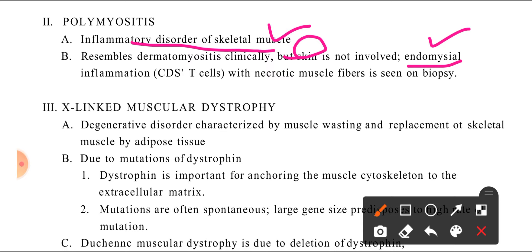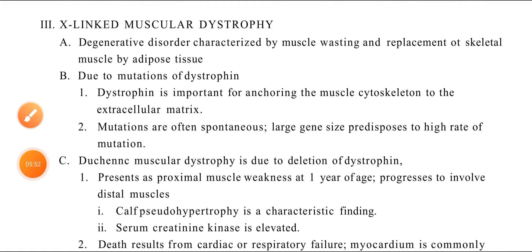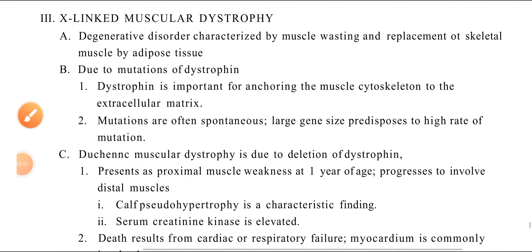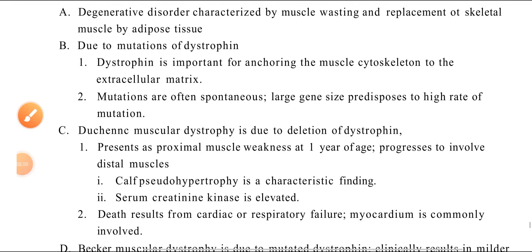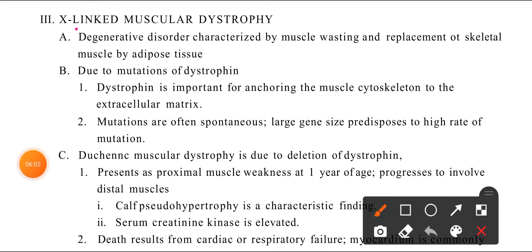Next we study X-linked muscular dystrophy. You will hear of Duchenne muscular dystrophy and Becker muscular dystrophy — both are in this category. X-linked means there is some association with genes. These are degenerative disorders characterized by muscle wasting — 'dystrophy' means the muscles waste away.